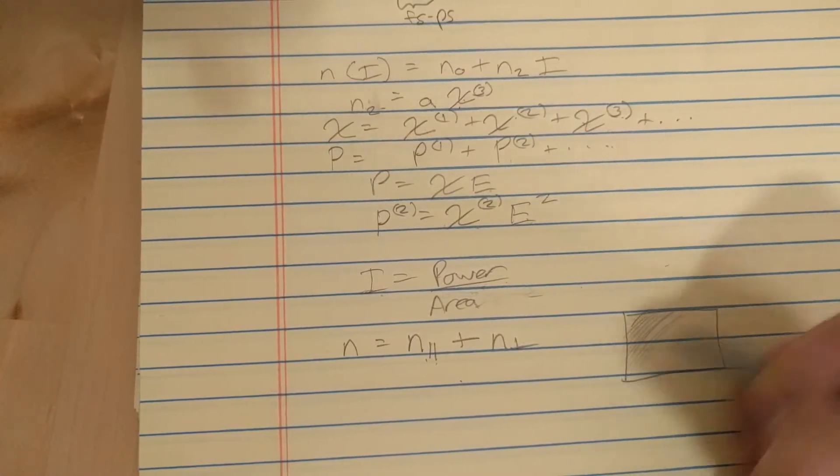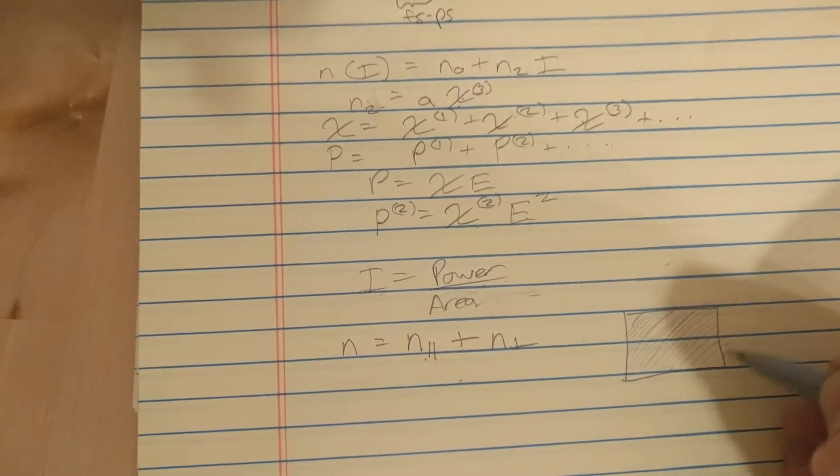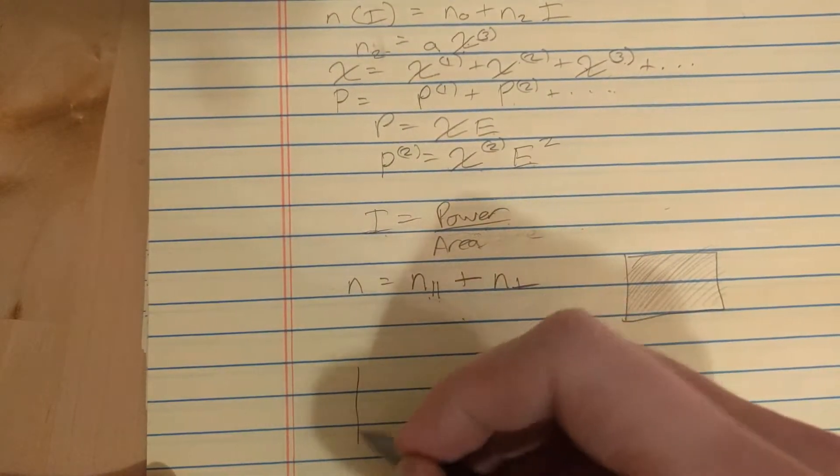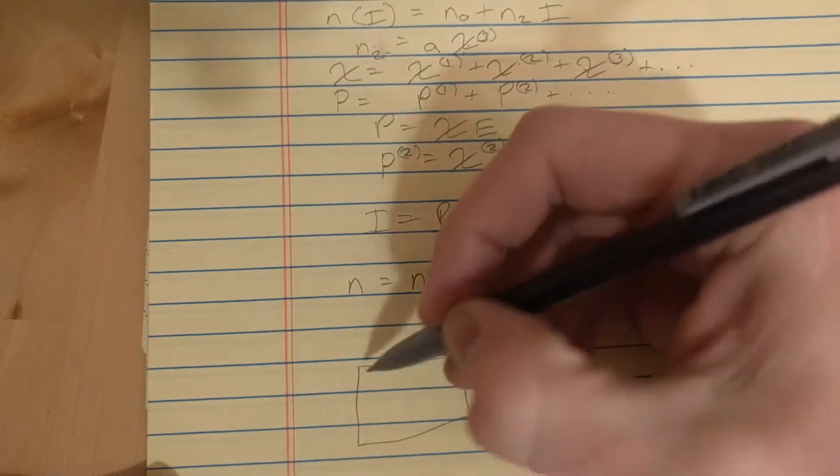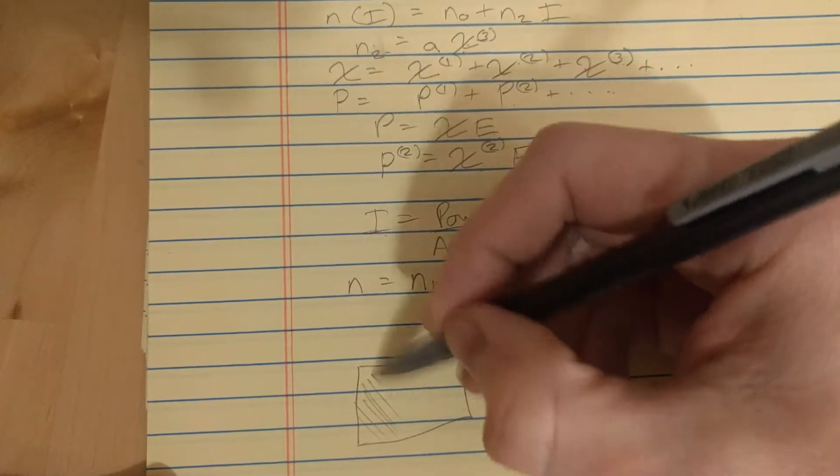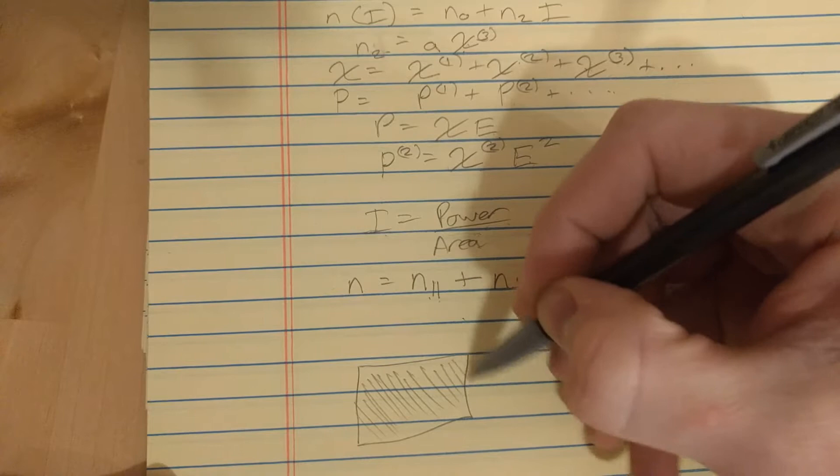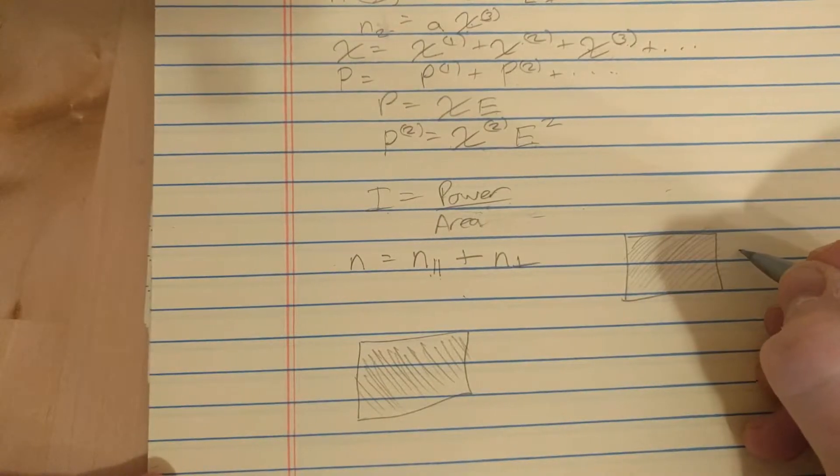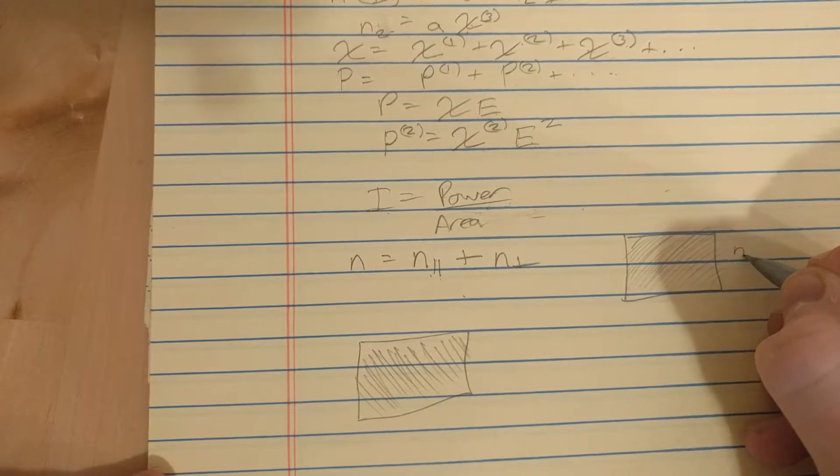And if this is our material, that's what it looks like before we pass light through it, we pass light through it, then it might look like something else. And before it might have just had an index of refraction n with